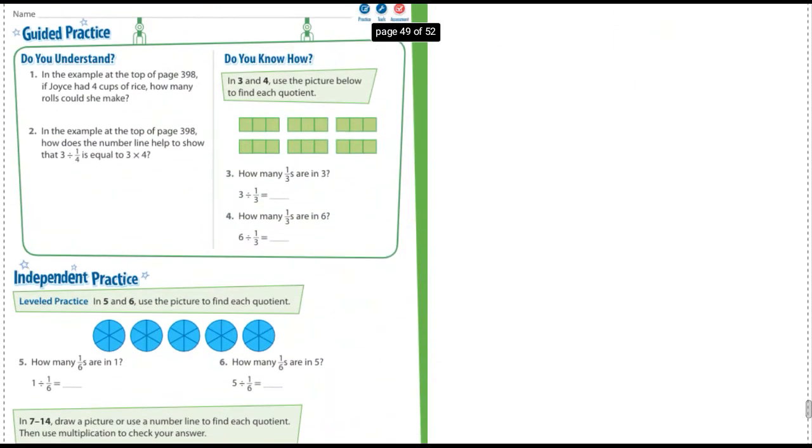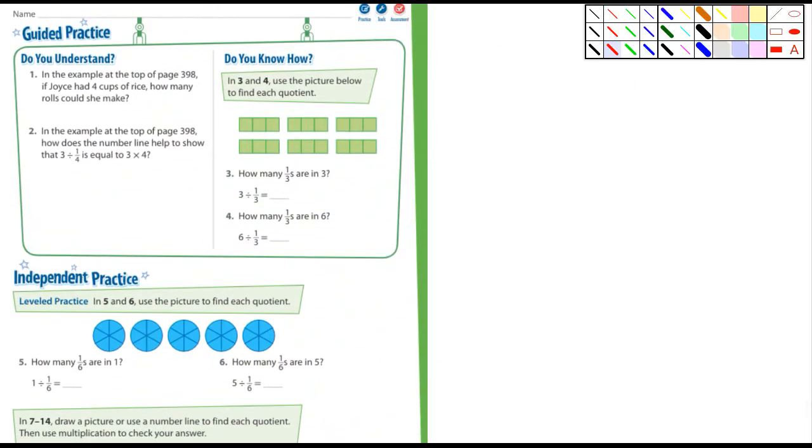Let's see here, in the example at the top of page 398, if Joey's had four cups of rice, how many rolls could she make? Well, what are we talking about here? We're talking about four then divided by one quarter. What's four times four? So she could make 16 rolls.